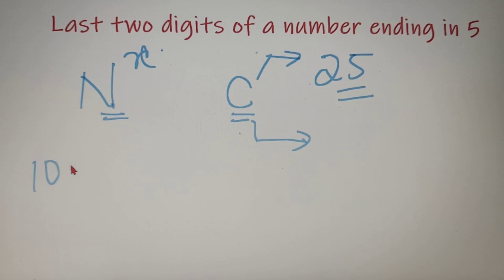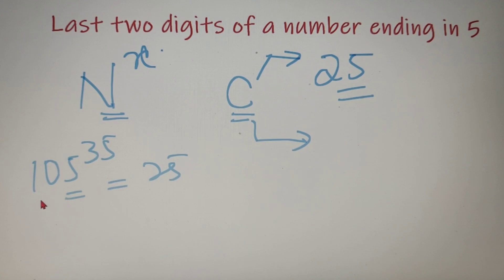For example, 105 raised to the power 35 will end in 25, because the last digit is 5 and the second last digit is even.